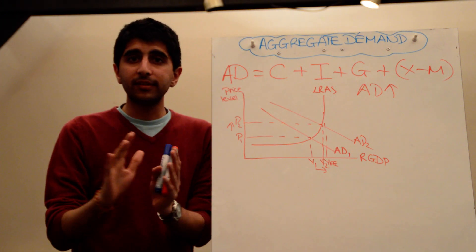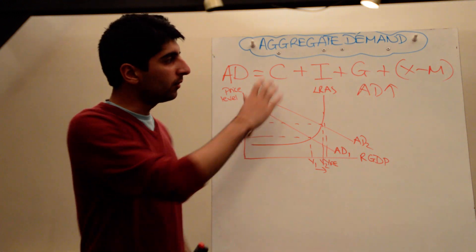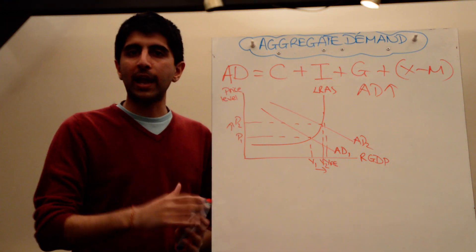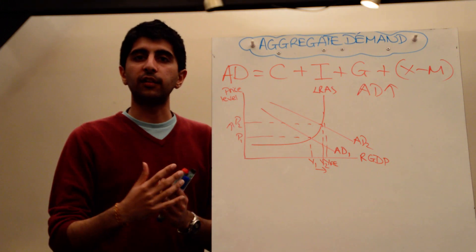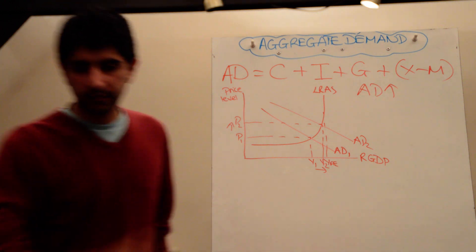That's aggregate demand done. Simple as that. Make sure you're savvy. There are probably about 25 different reasons why AD might shift. Know them all, because this is a very common exam question, knowing when AD is going to shift. Thanks very much. See you next time.